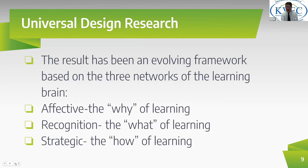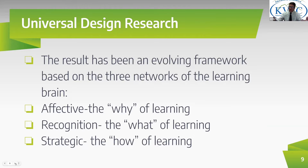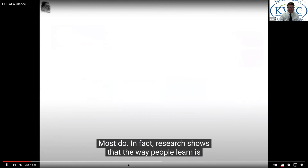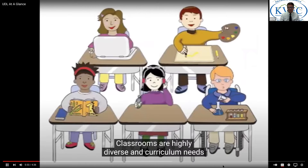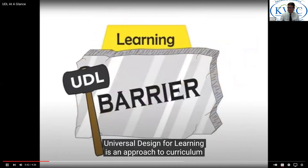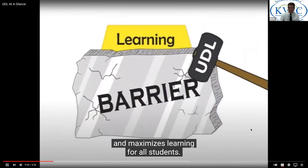The guy who kind of spearheaded universal design for learning was a Harvard education professor in the 90s named David Rose, and also CAST — the Center for Applied Special Technology — was the first institution to create curriculum for schools in this manner. The result has been an evolving framework based on three networks of the learning brain: the affective (the why of learning), the recognition (the what of learning), and the strategic (the how). Research shows that the way people learn is as unique as their fingerprints, and universal design for learning is an approach to curriculum that minimizes barriers and maximizes learning for all students.